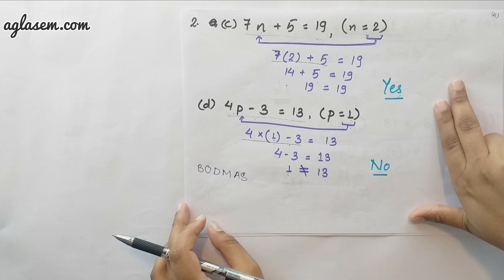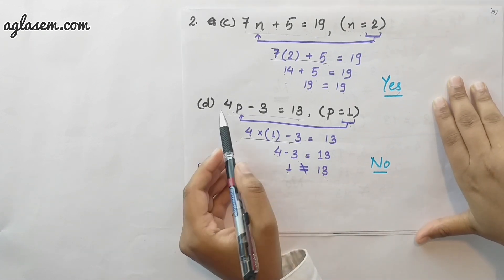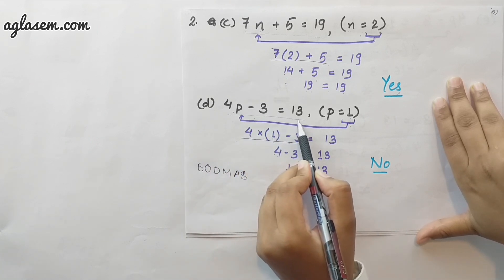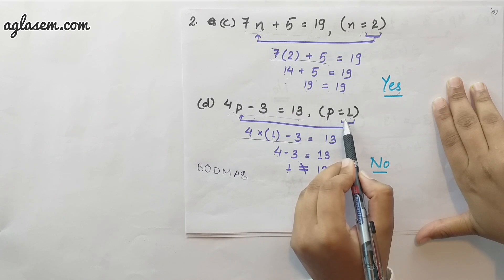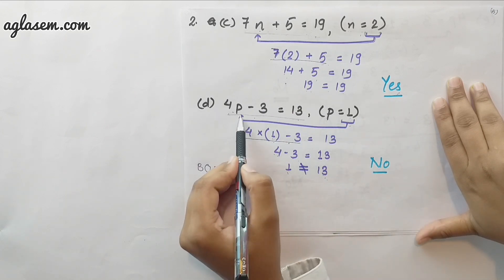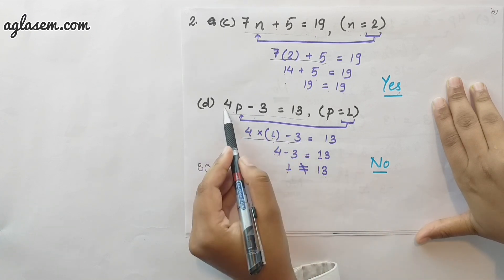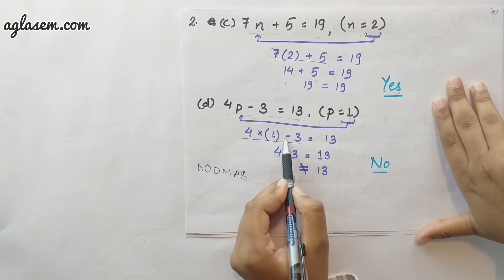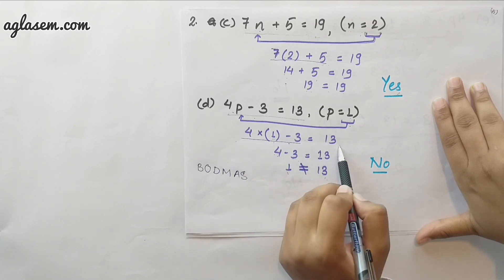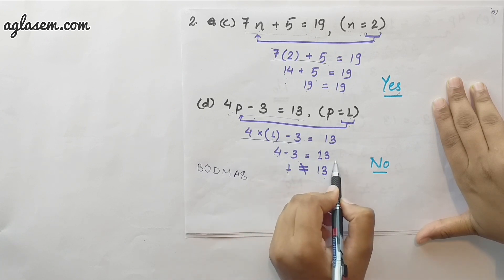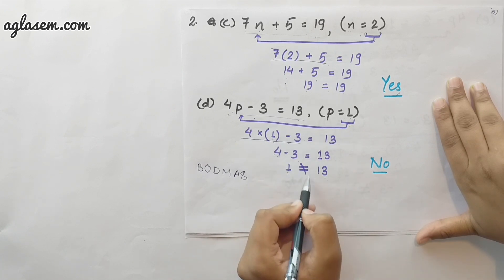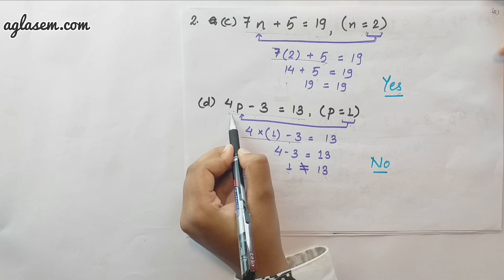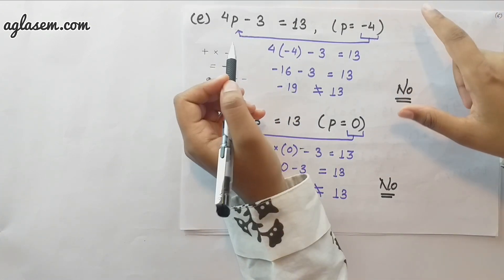In the fourth question, the equation is 4p minus 3 equals to 13 and the value of p is 1. We put the value into the equation: 4 into 1 minus 3 equals to 13. 4 minus 3 equals 1. 1 is not equal to 13, hence the value of p equals 1 does not satisfy the equation.